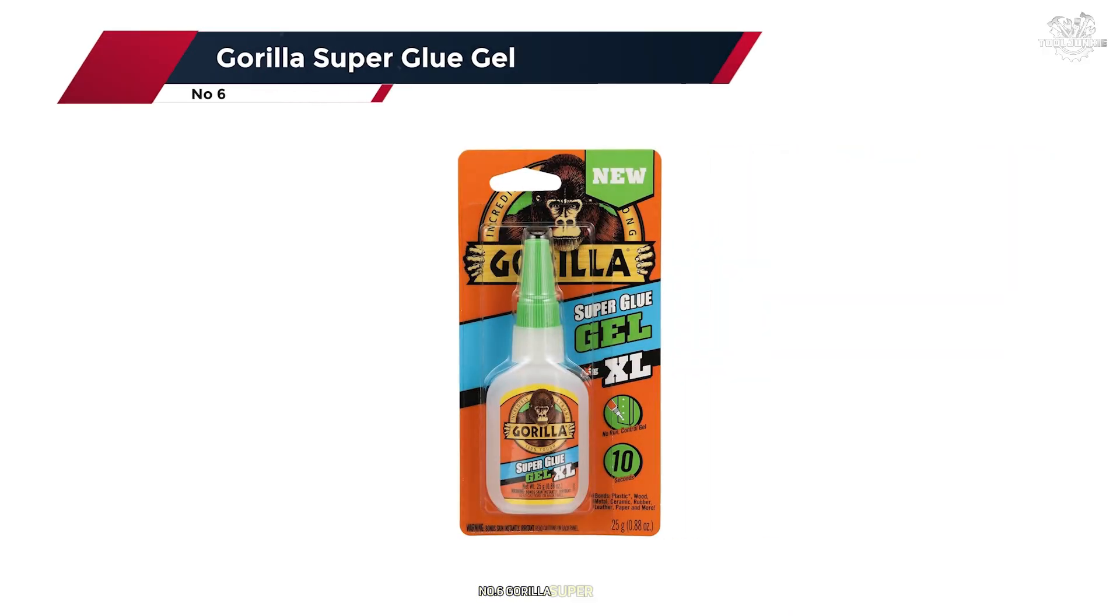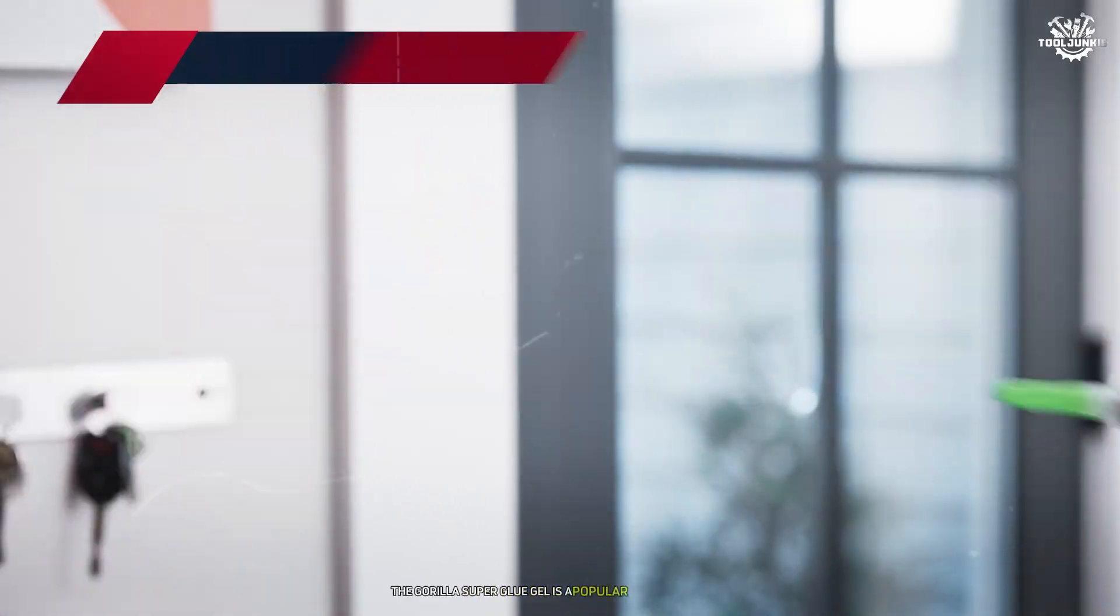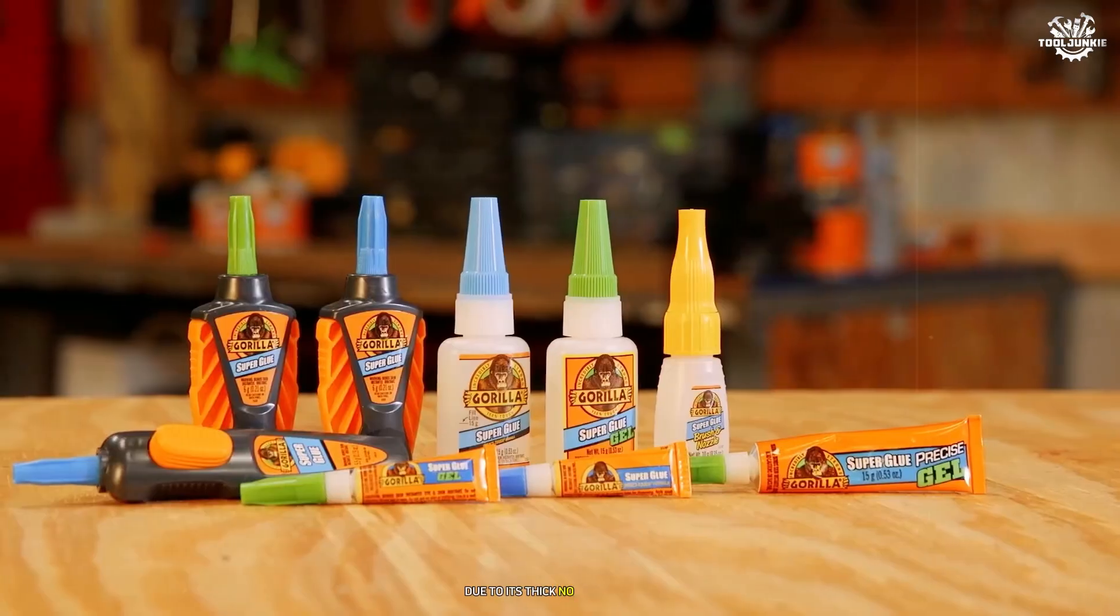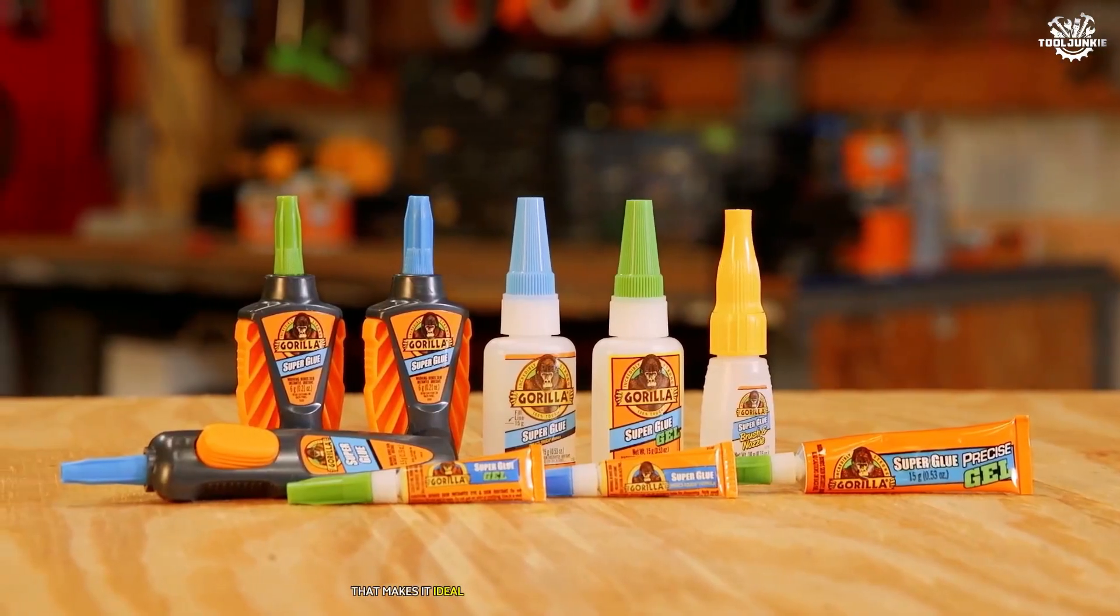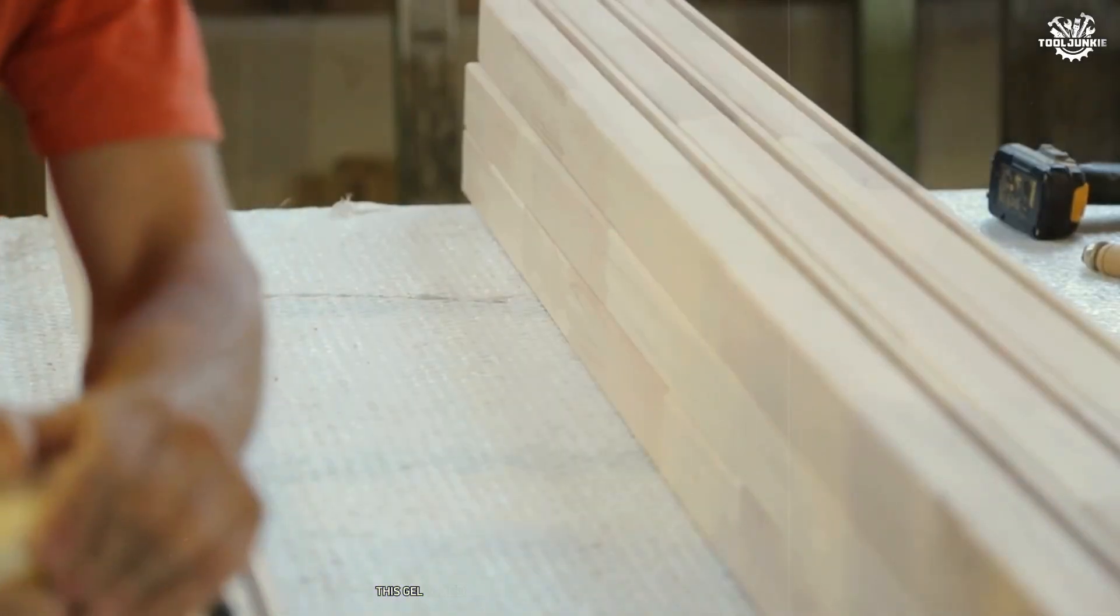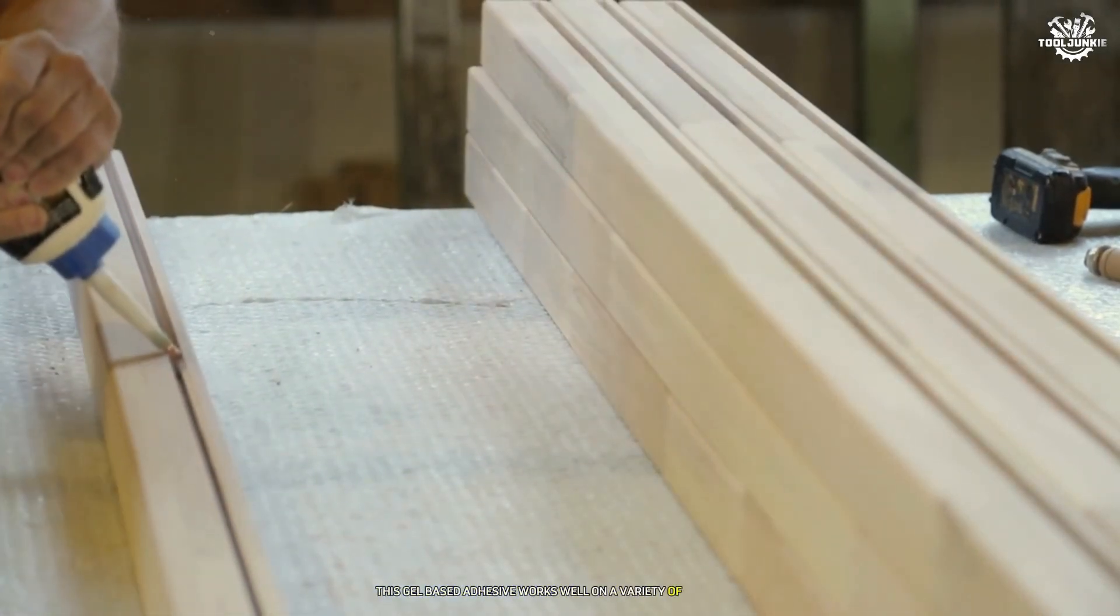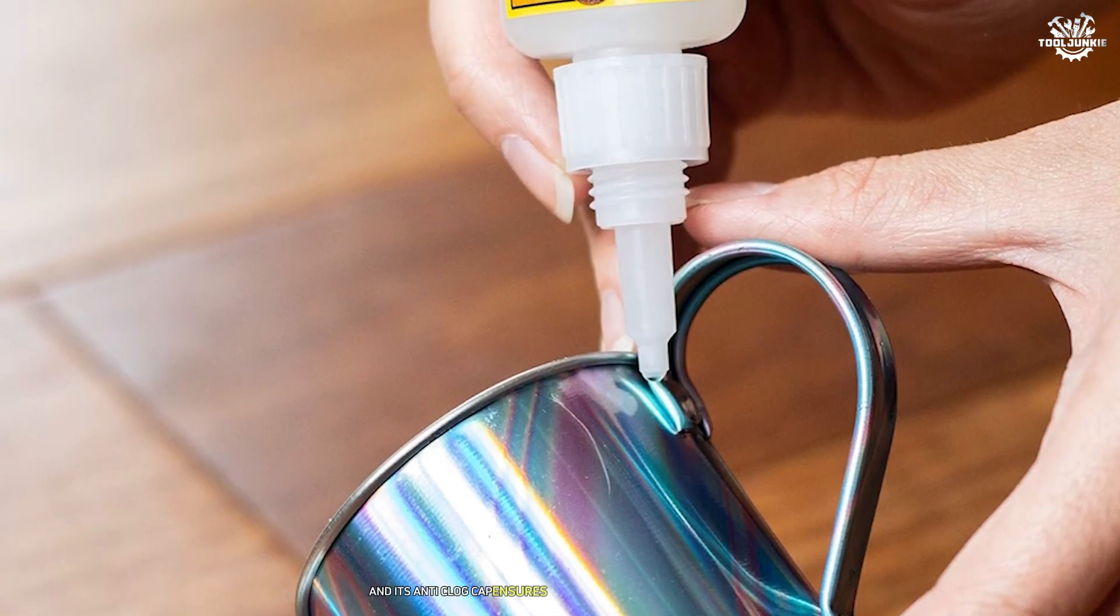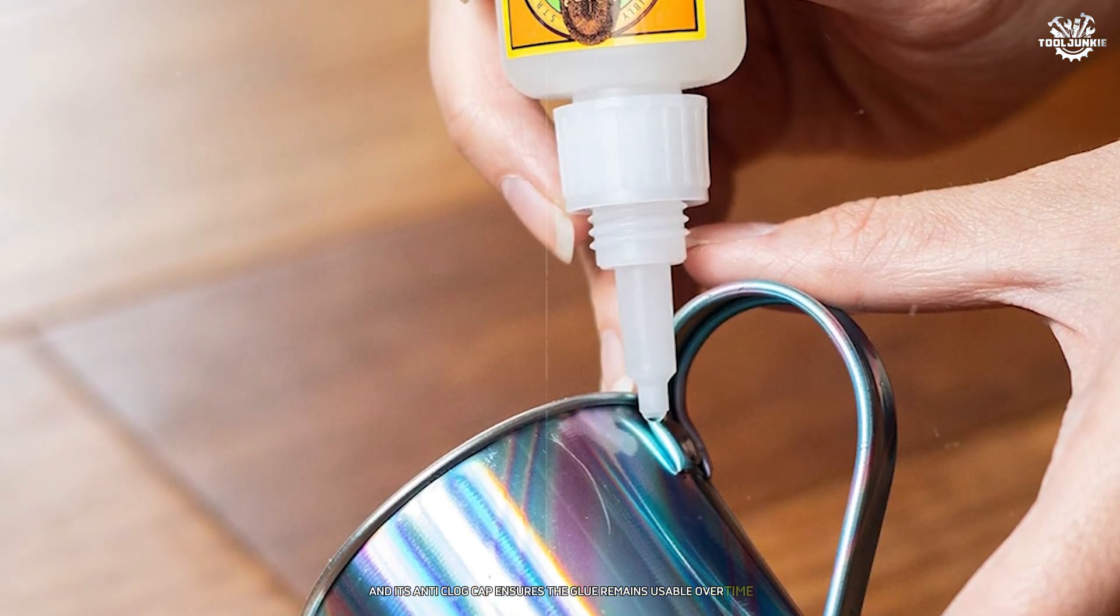Number 6. Gorilla Superglue Gel. The Gorilla Superglue Gel is a popular choice among DIY enthusiasts and professionals due to its thick, no-drip formula that makes it ideal for vertical applications and controlled bonding. This gel-based adhesive works well on a variety of materials, including PLA, and its anti-clog cap ensures the glue remains usable over time.